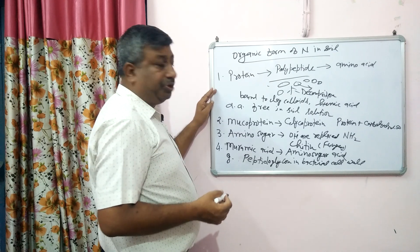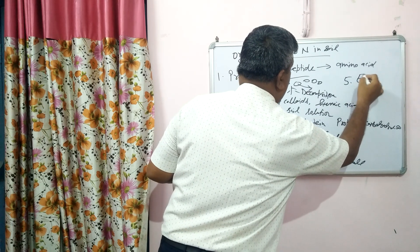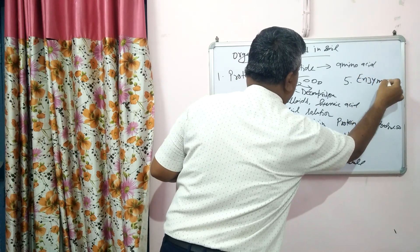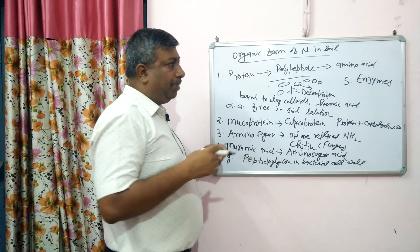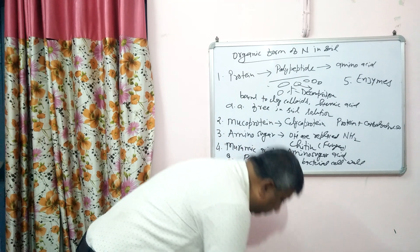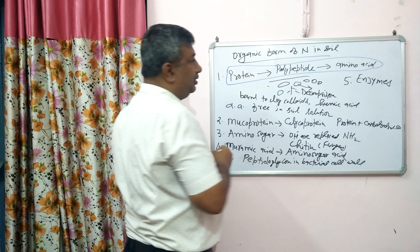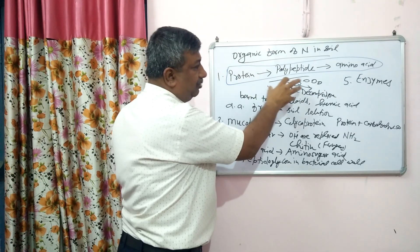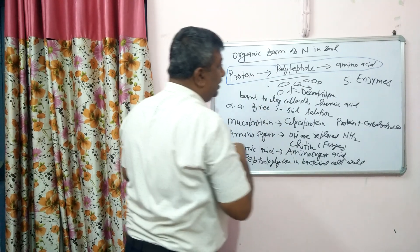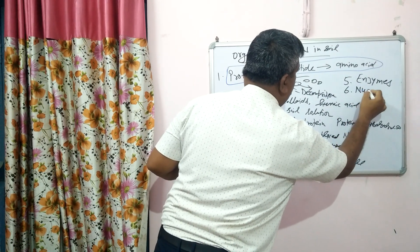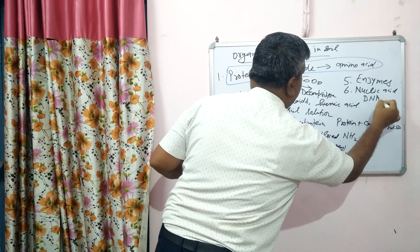These are the different organic forms of nitrogen, but the major form is protein. Some enzymes are also present in soil; most enzymes are proteins and they are secreted by microbes. The major organic forms are protein and amino sugars, because proteins are present in crop residues and are subjected to decomposition.